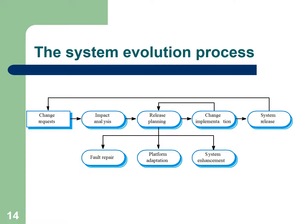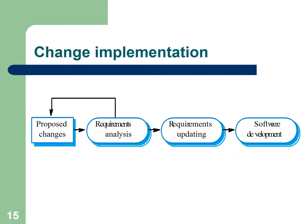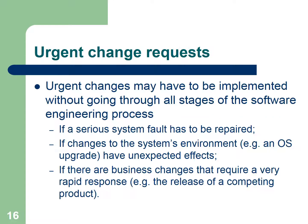The steps in the system evolution process include: change request, impact analysis, change planning, change implementation, and system release. Types of changes include: fault repair, platform adaptation, and system enhancement. Change implementation is explained further — urgent changes may be implemented without going through all stages of the formal software engineering process.